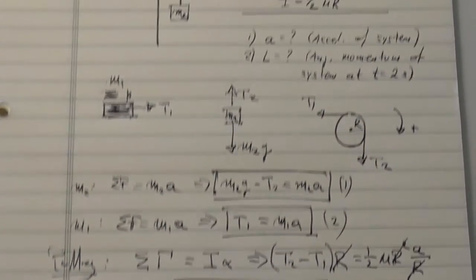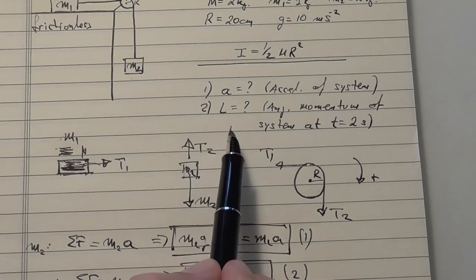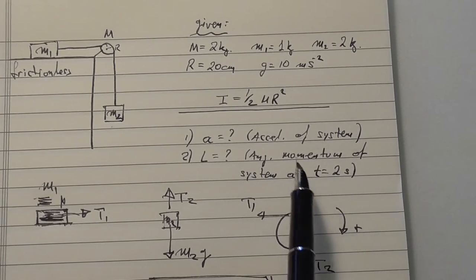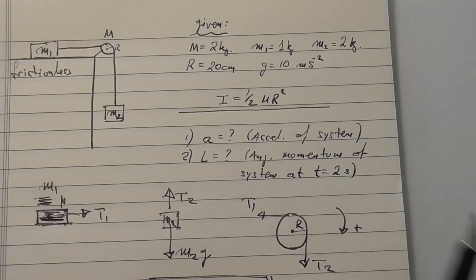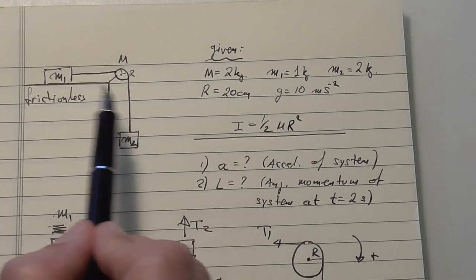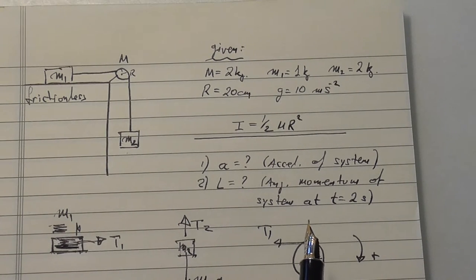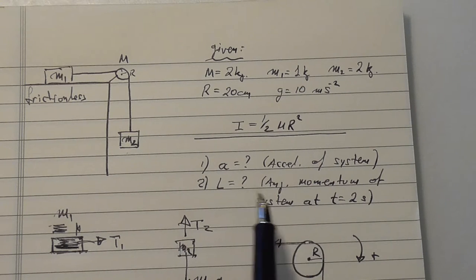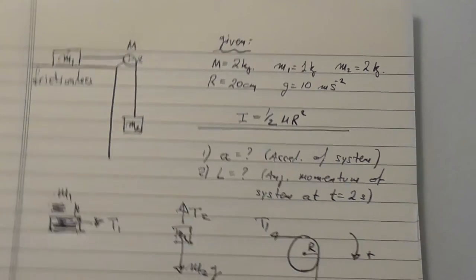Sigma, the net torque, is equal to, instead of ma, it is I times alpha, the angular acceleration. We got an extra equation that answered the question of the acceleration of the system, and this is the acceleration of both masses. The next question was, what is the angular momentum at the time of 2 seconds? Initially, the system starts with zero speed, and then it picks up some speed. We have some kinematics to use also in this case.